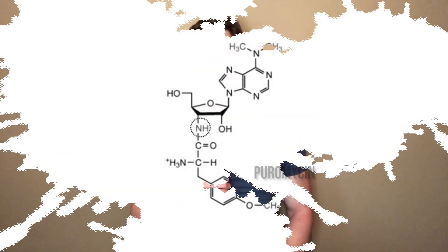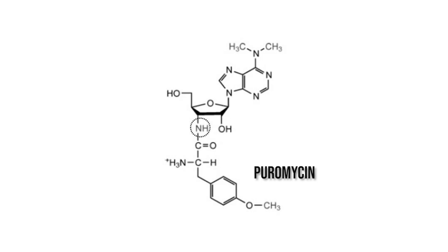Scientists often want to measure protein synthesis in cells and tissues, be it liver, muscle, or any other tissue, for any number of reasons. There are several ways of doing it, but this is one of the easiest and a really clever way of doing it. We use an antibiotic, puromycin, and as we will see, it will allow us to measure protein synthesis.